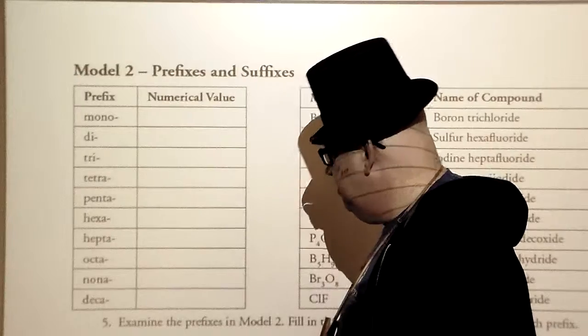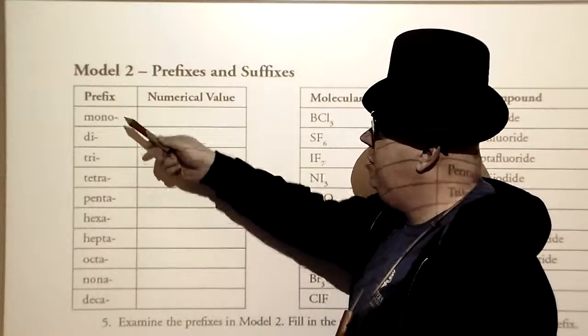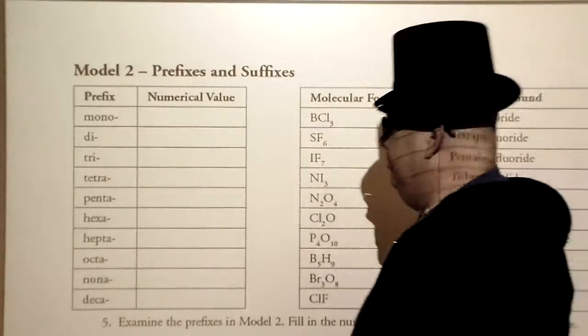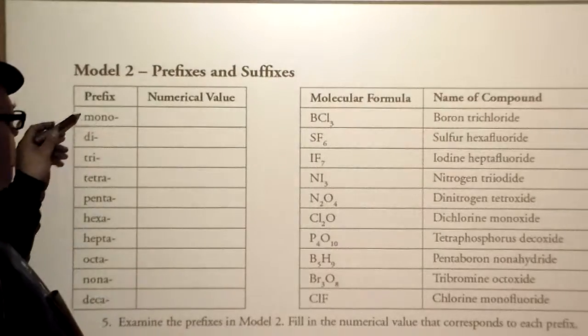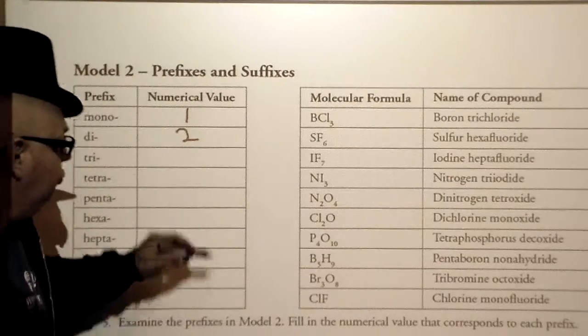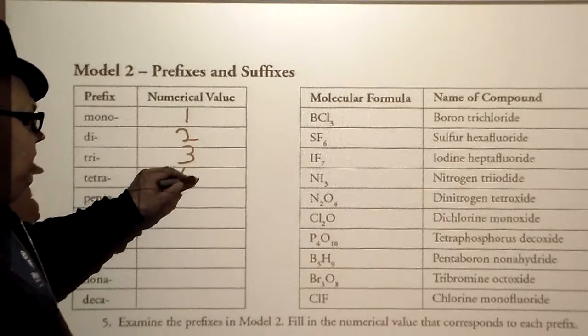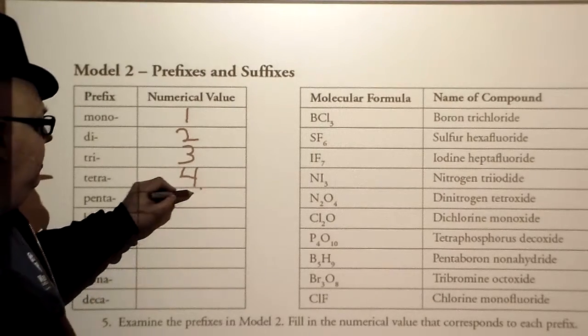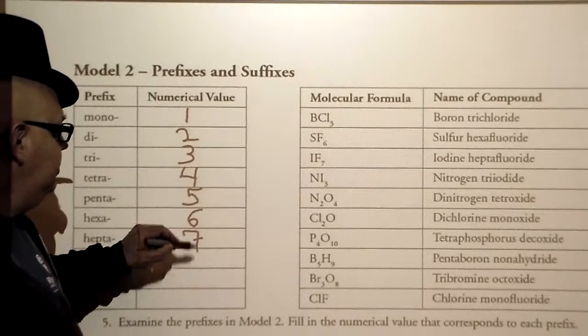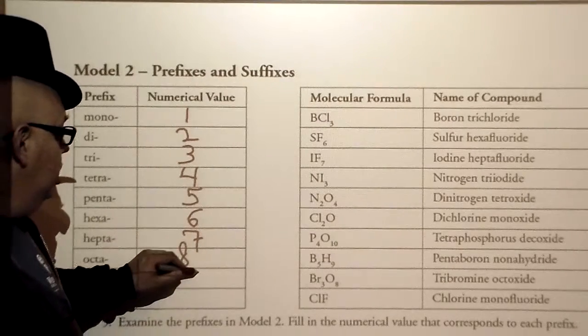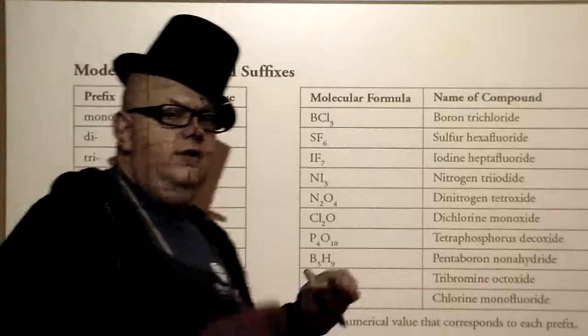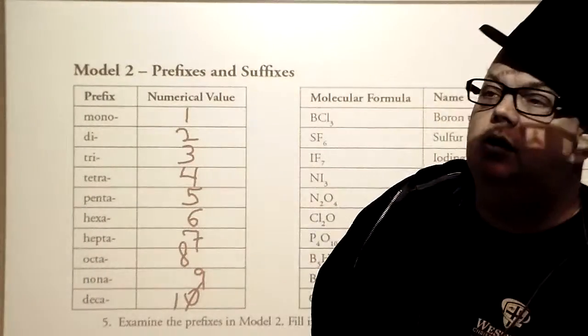So the first thing you need to be aware of are your prefixes. Now, your prefixes start out at mono, goes to deca. So let's check this out. Mono meaning 1, di meaning 2, tri meaning 3, tetra meaning 4, penta meaning 5, hexa meaning 6, hepta is 7, octa is 8, nana is 9, deca is 10. All those are prefixes that are used in naming molecular compounds.